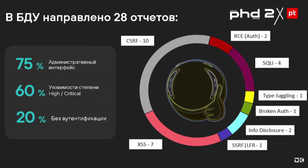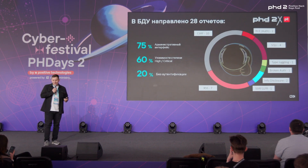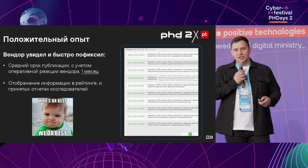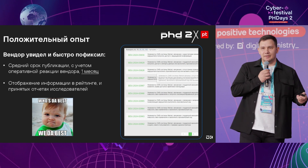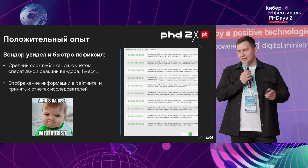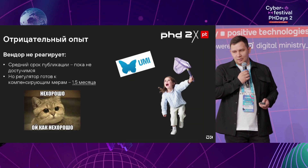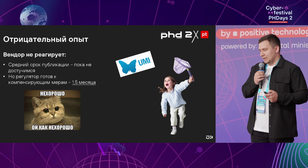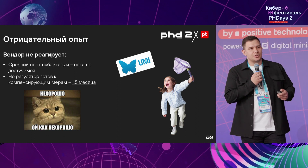The results: twenty-eight reports were sent to the vulnerabilities database. Most of them were concerned with the administrative interface — sixty percent were high and critical, and twenty percent were left without authentication. We just did a quick review, a quick check of the level of security. In terms of good communication practice, vendors responded to the regulator's request, fixed everything quickly, and the average publication period was about a month. But we also had negative experience where the vendor does not respond and the regulator is running after the vendor trying to catch it.